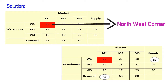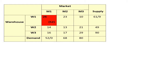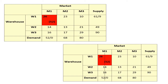The second step is to allocate the maximum possible units to the selected cell. Supply is 61 and demand is 52, so we allocate 52 units to cell W1,M1. After allocating 52 units to the selected Northwest Corner, we subtract that number from the respective supply and demand.